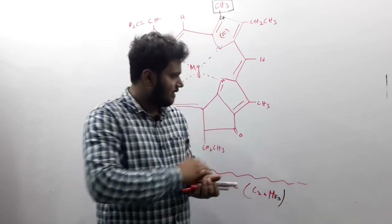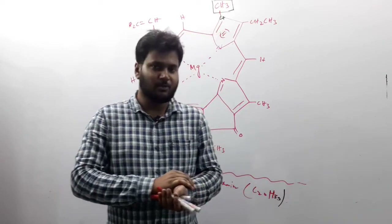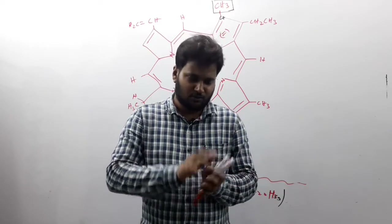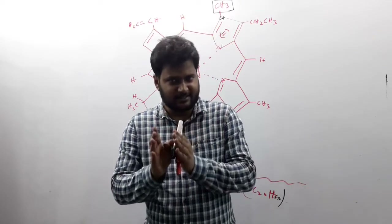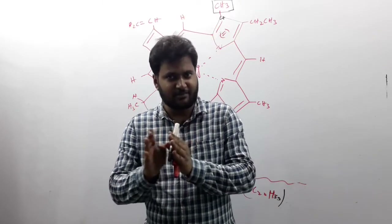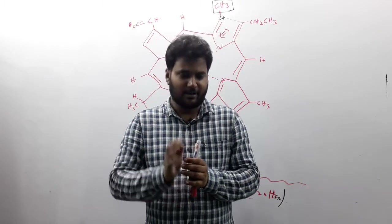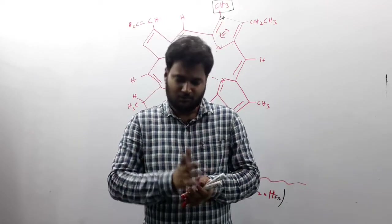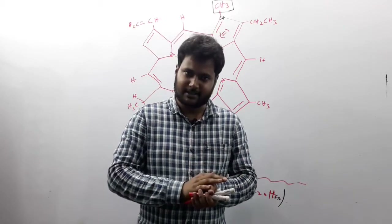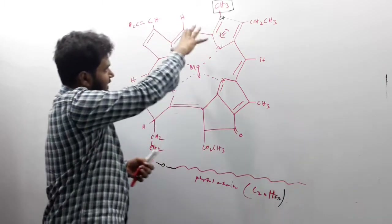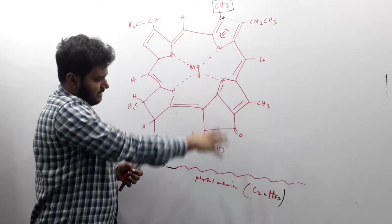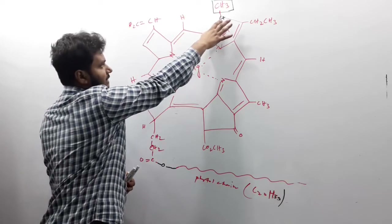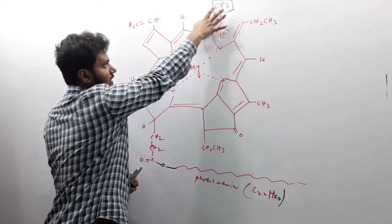So this is the structures of chlorophylls — different types of chlorophylls. There are some differences between each type of chlorophyll, but they all share one common structure. We will discuss it. You can see that this is the structure of chlorophyll A, and this is the C7 position.